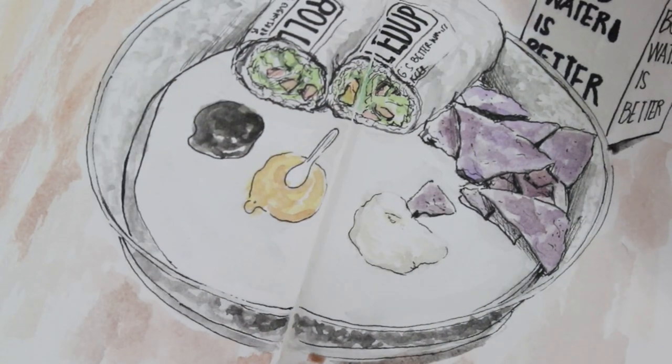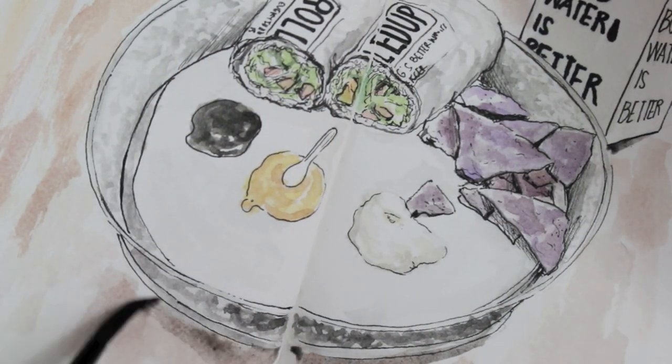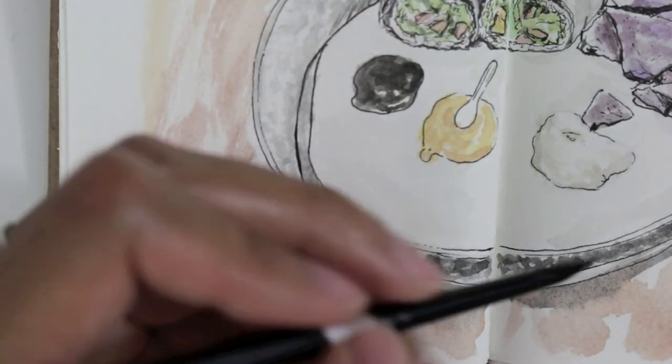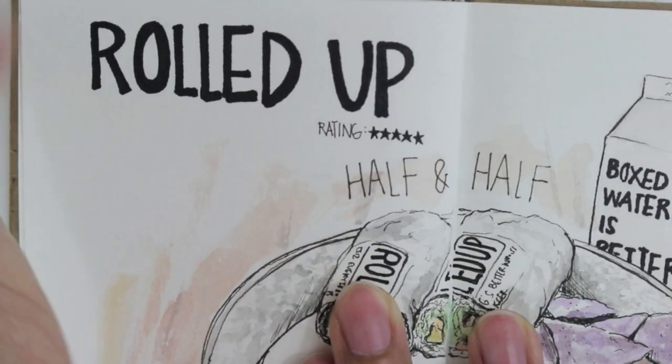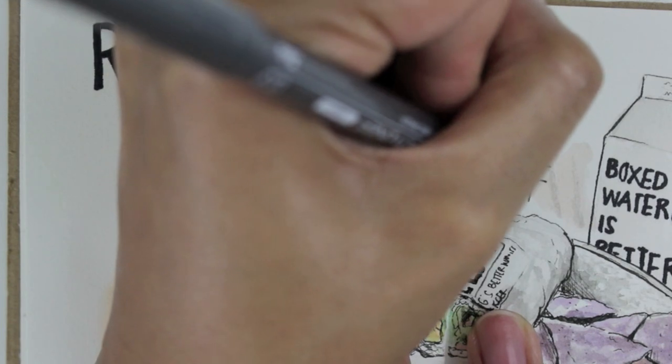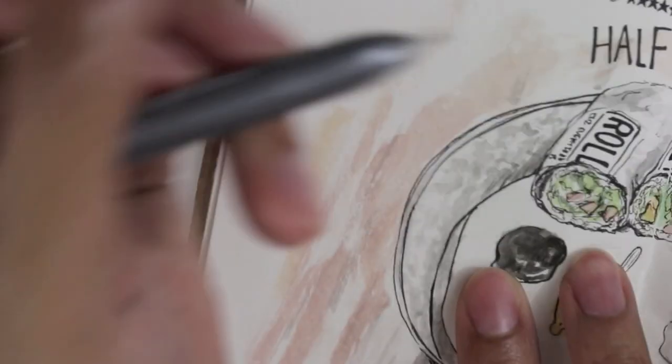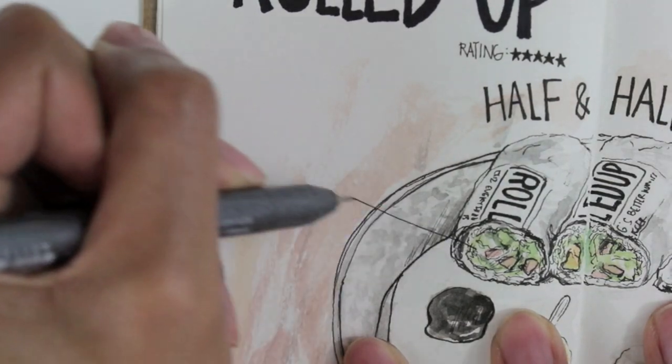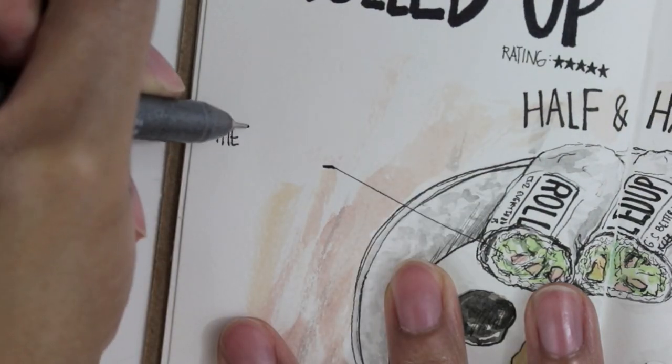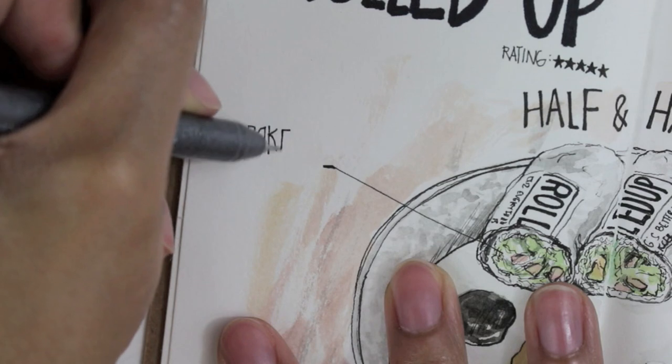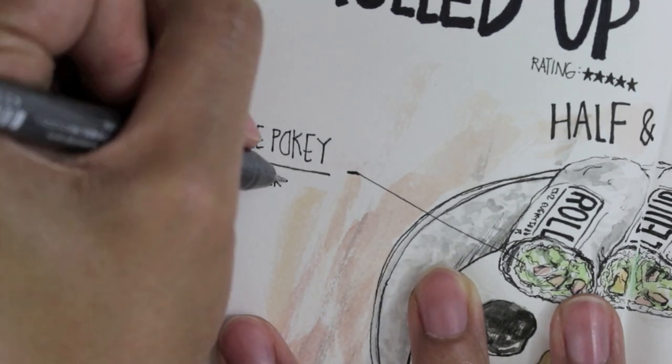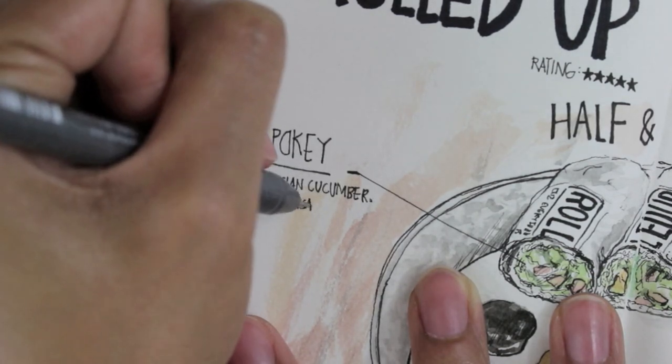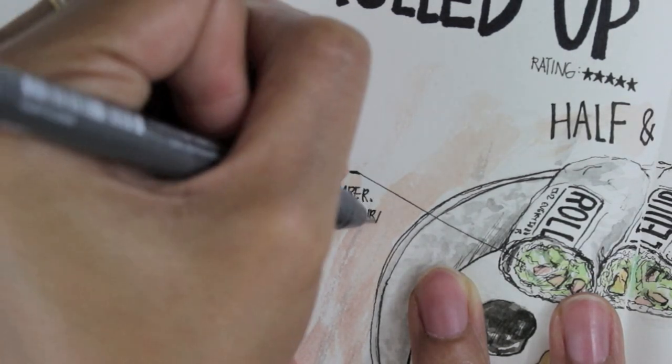But overall, I would definitely recommend Rolled Up. It's really healthy and filling. I think it's cool because they have different options. You know, if you're a meat eater or a pescatarian or a vegetarian, there's different things that you can try. Especially since you can build your own roll. So that's really cool, I think. I don't think it's that expensive to be honest. Especially with how fresh the fish is. And just the fact that it's healthier than an actual burrito. I think it's worth it.